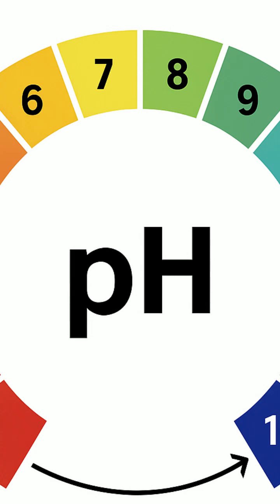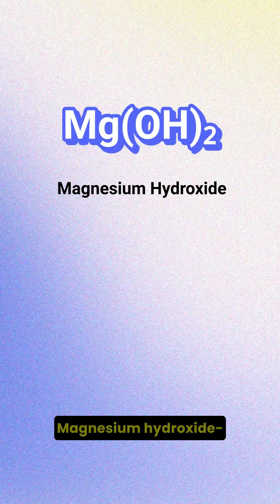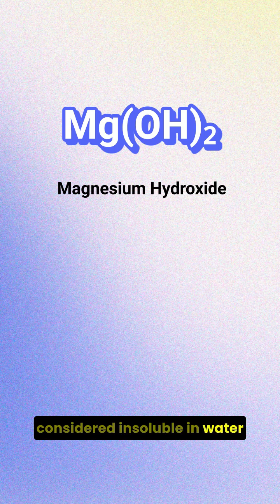Magnesium hydroxide, Mg(OH)2, is generally considered insoluble in water, but its solubility can be increased by adjusting the pH.